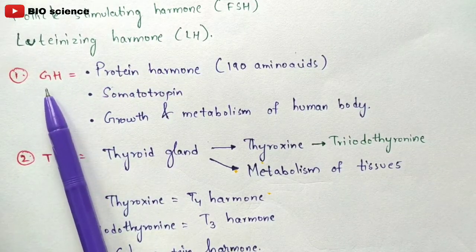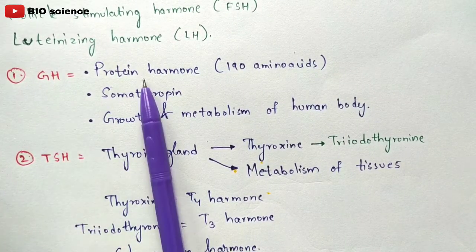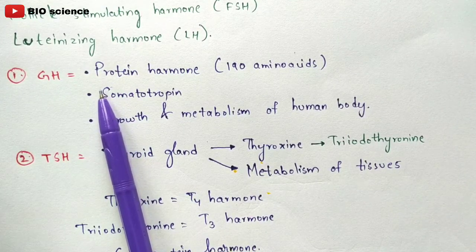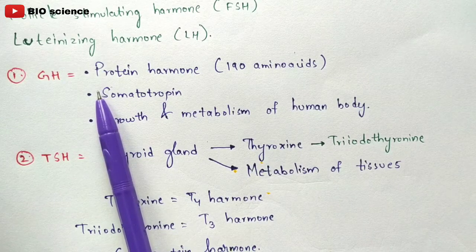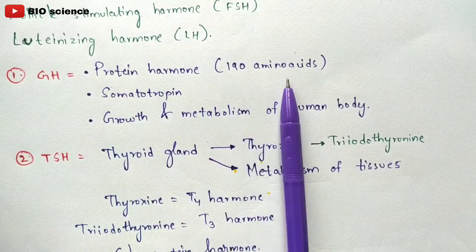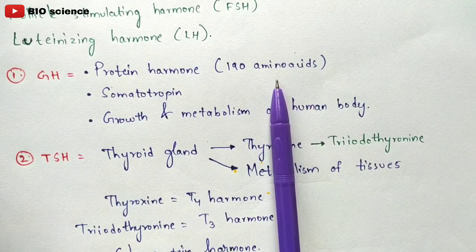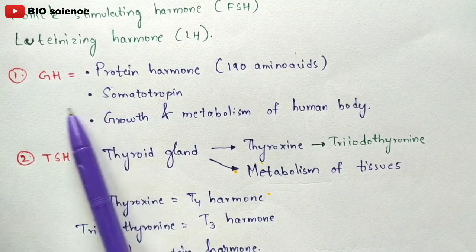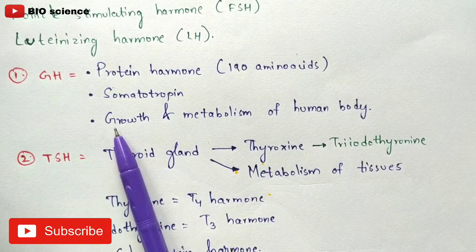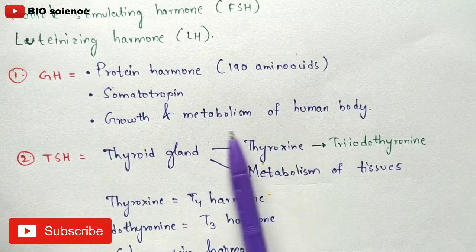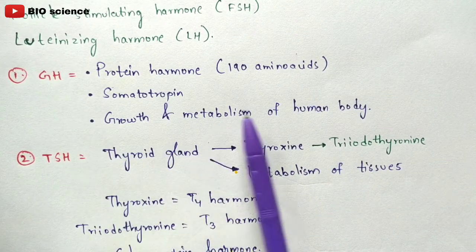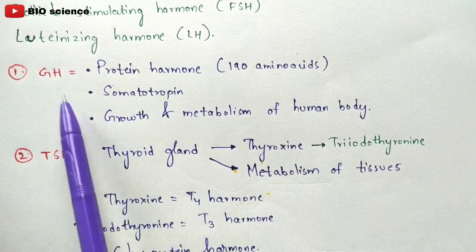The first hormone is growth hormone (GH). It is a protein hormone — proteins being a group of amino acids. This growth hormone contains 190 amino acids. It is also called somatotropin, and its major function is to regulate the growth and metabolism of the human body, increasing the size of muscles and bones.